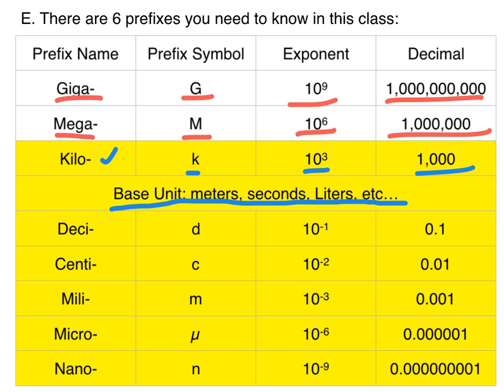So, deci. Deci is a lowercase d. It is 10 to the minus one, which is 0.1. It's a tenth. Centi, that's C. Lowercase, that is. 10 to the negative two. That is a hundredth. Milli is M. 10 to the minus three. That is a thousandth. Sorry, I'm getting ahead of myself here.